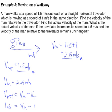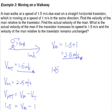The last part: what is the actual velocity of the man if the travelator increases its speed to 1.5 meters per second and the velocity of the man relative to the travelator remains unchanged? Using the same formula, the relative velocity remains 1.5, but the travelator speed changes from 1 to 1.5. So the actual velocity of the man becomes 1.5 plus 1.5, which gives 3 meters per second.